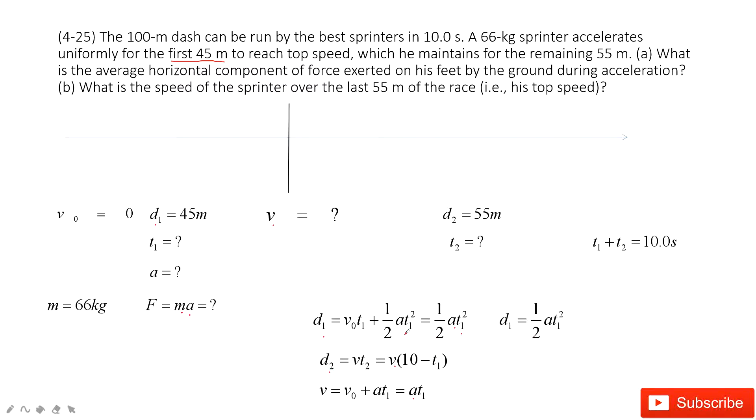And then we can simplify it. d_1 is 1/2*a*T_1 squared. d_2, V input, the V inside is a*T_1*(10 minus T_1). In this one, d_1, d_2 are given.